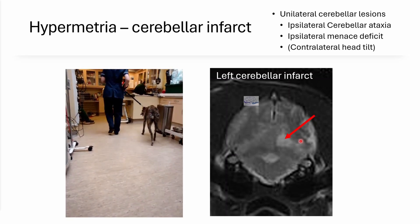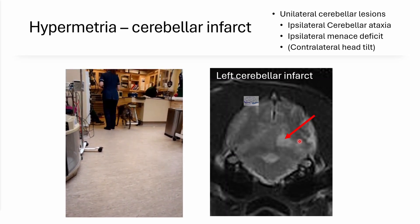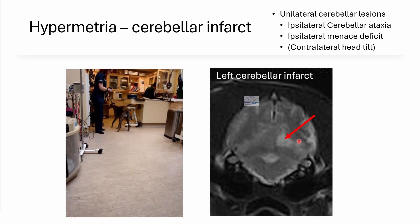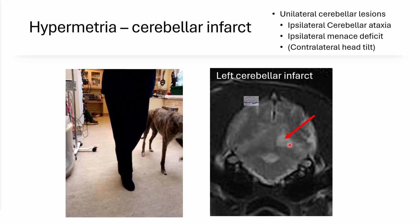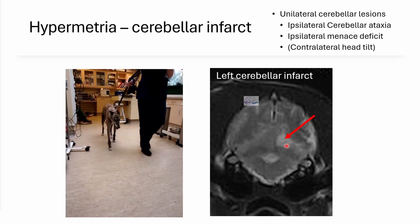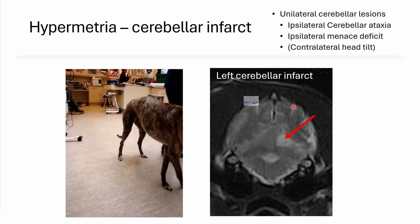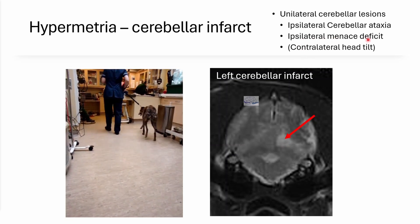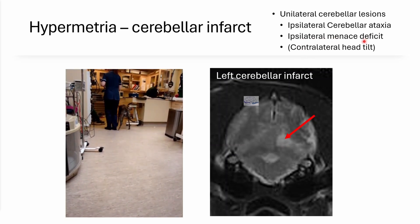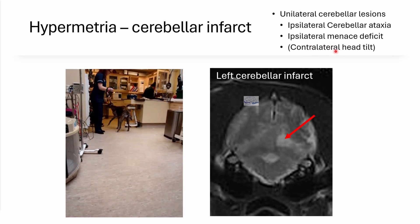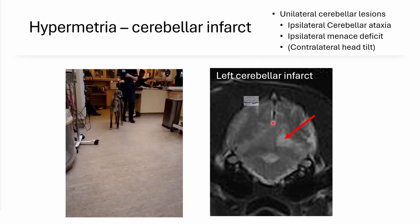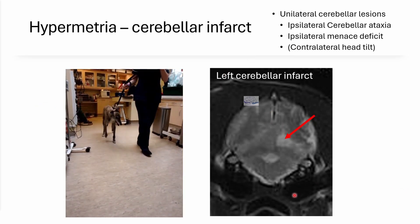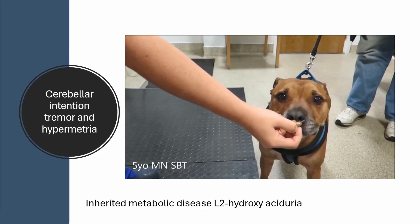When the dog turns, we can really see an exaggerated protraction of that limb during that more complex movement. Additionally, this dog had an ipsilateral menace deficit — the cerebellum coordinates the menace response as well — and may have a contralateral head tilt with a lesion in this area.